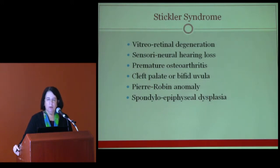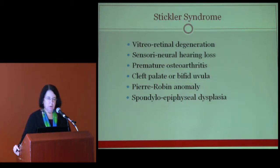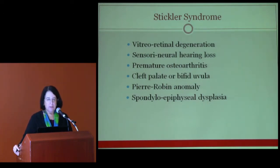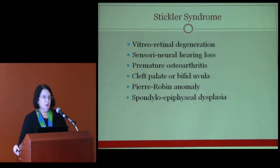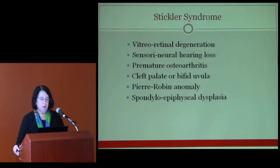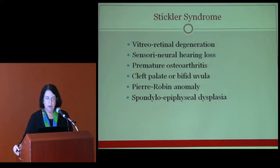Stickler syndrome is characterized by vitreo-retinal degeneration, sensorineural hearing loss which is usually early in onset, and premature osteoarthritis. These patients may also have a cleft palate or bifid uvula and Pierre Robin anomaly with a relatively small chin. On x-rays they present with spondyloepiphyseal dysplasia, showing flattening of the vertebrae and epiphyseal dysplasia.